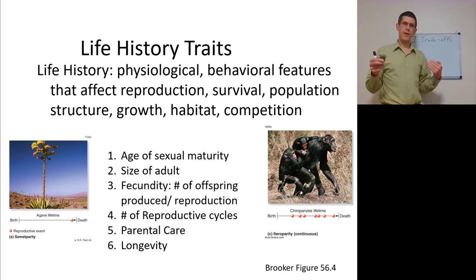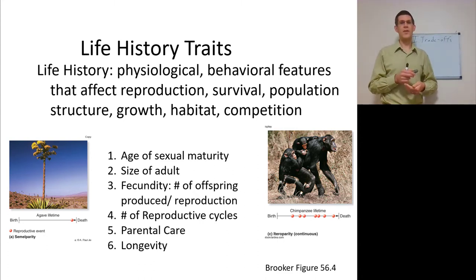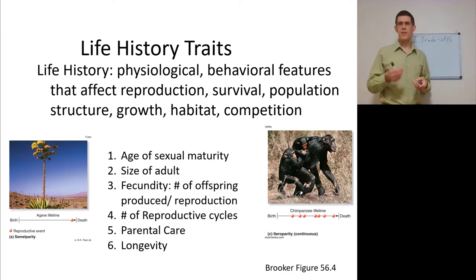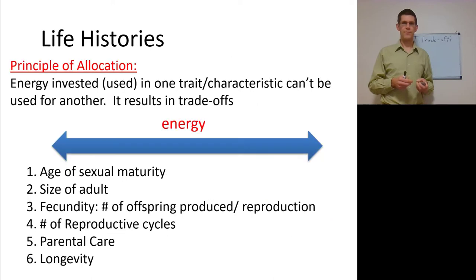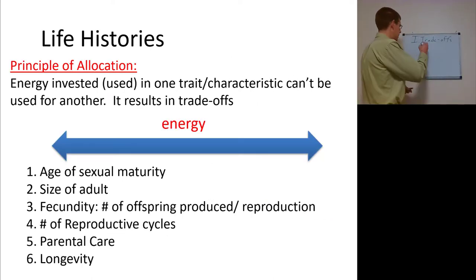Longer time spent in parental care means a longer lifespan, but it does reduce the number of reproductive cycles. If a chimpanzee is taking care of one offspring, it's harder to take care of another. This comes down to the principle of allocation.